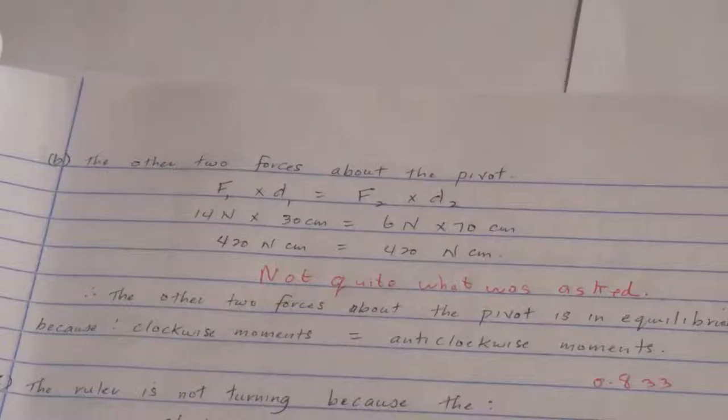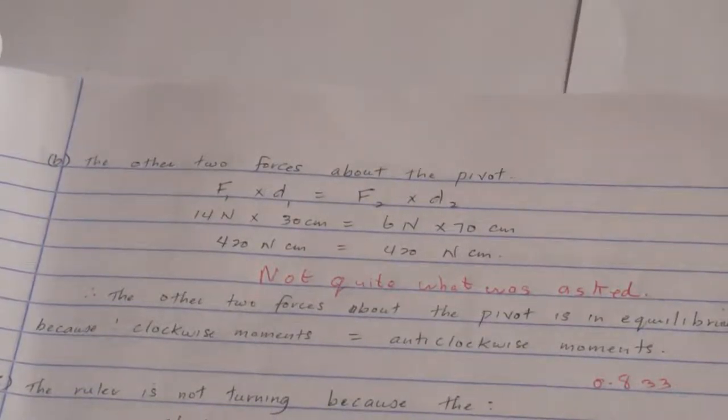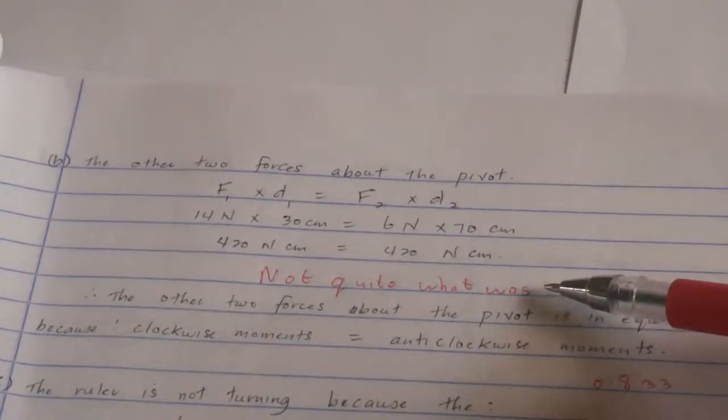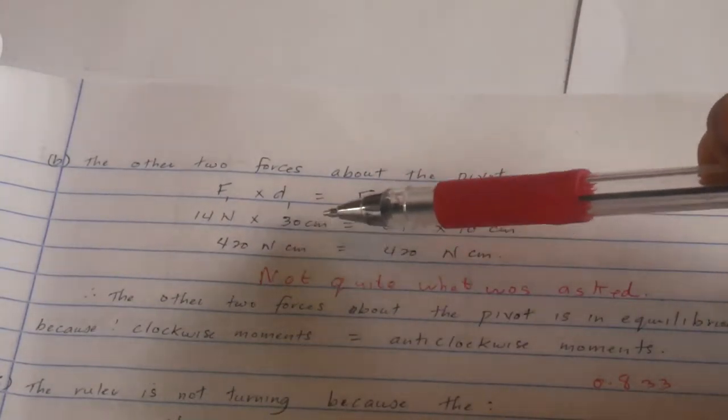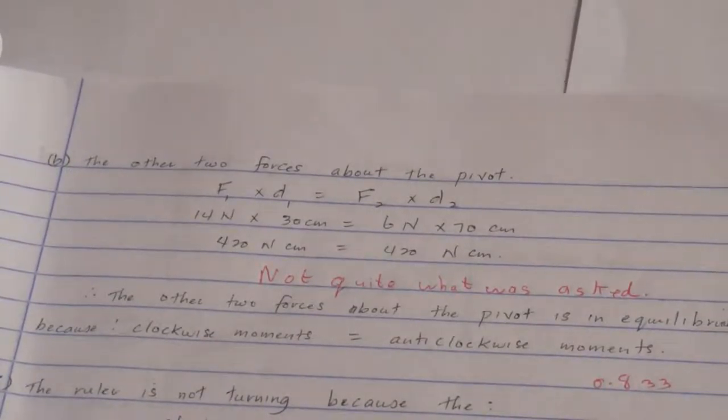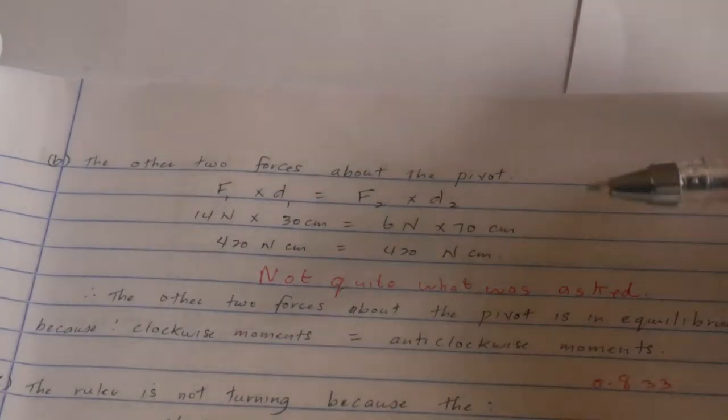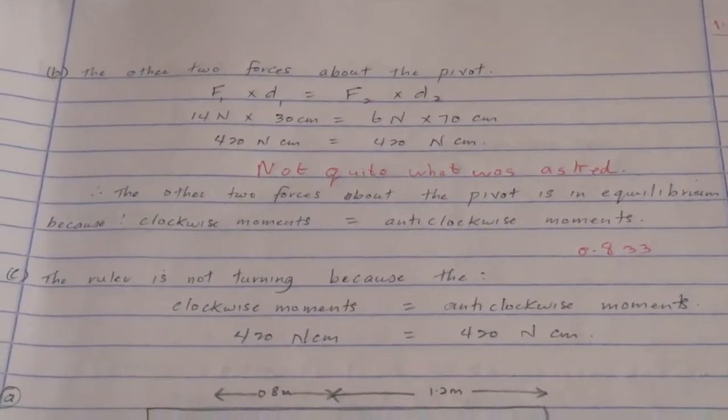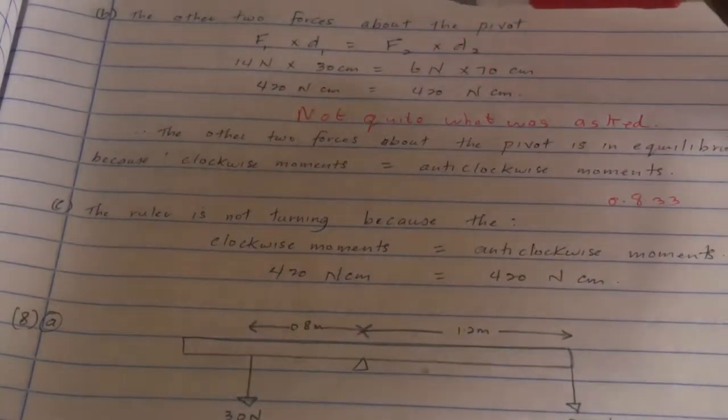Next, calculate the moment of the other two forces about the pivot. Just force times distance: 70 cm multiplied by 6 newtons and 14 cm with 30 newtons. You were not asked to show this to compare them. They said do it individually. That would be part of the question. The C part of the question is asking is it turning clockwise or anti-clockwise. That's when you do the comparison.